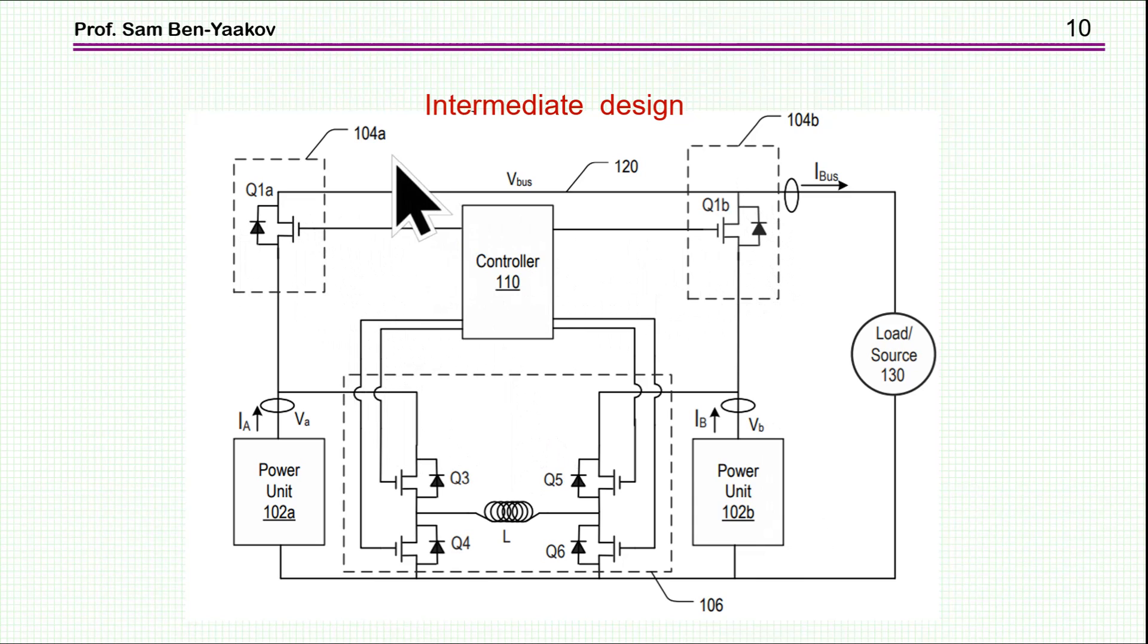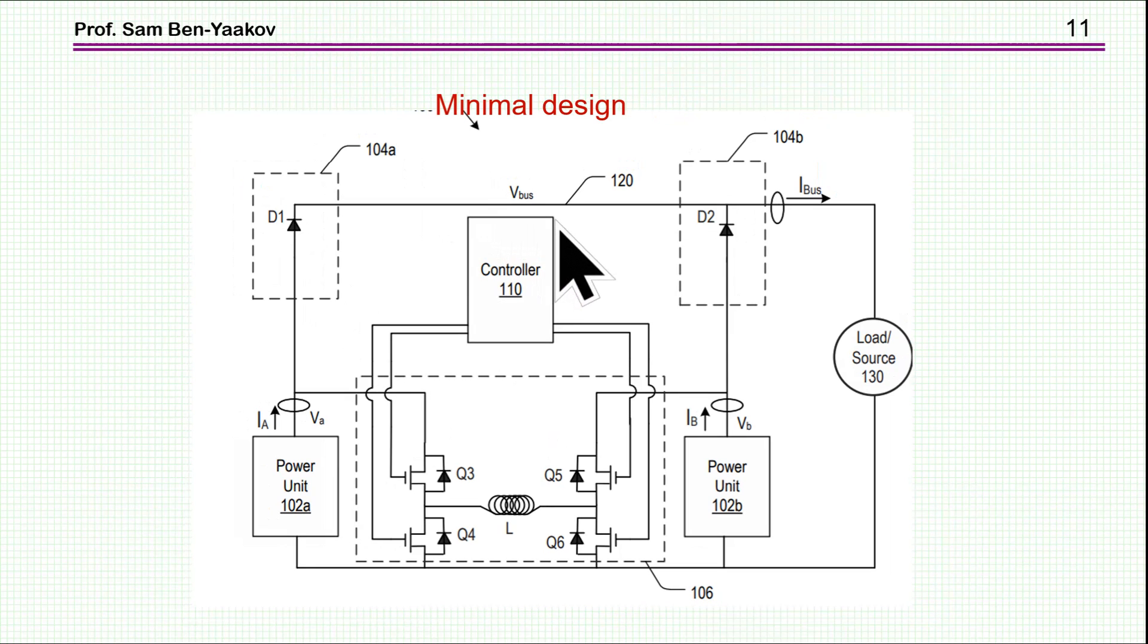You turn on this transistor, then you get conduction through the rds1 with a better efficiency. So this is like an intermediate design. And say a poor boy's option would be to use just two diodes.